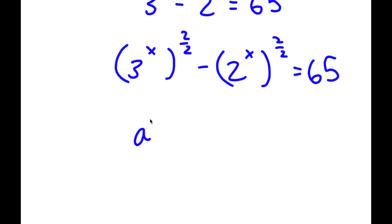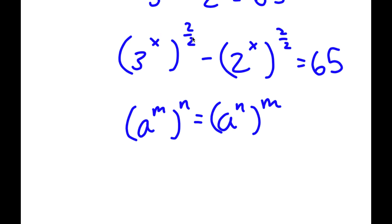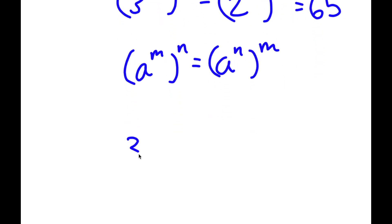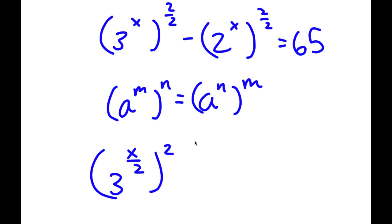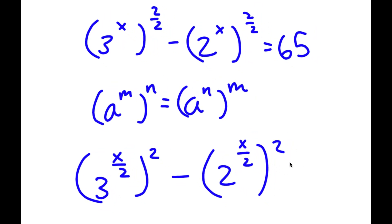Now, if I have something in the form a to the power of m to the power of n, this is the same thing as a to the power of n to the power of n. So in this case, I can switch the places of these two. I can actually rewrite this as 3 to the power of x over 2 to the power of 2. So now I have 3 to the power of x over 2 to the power of 2 minus 2 to the power of x over 2 to the power of 2 is equal to 65.